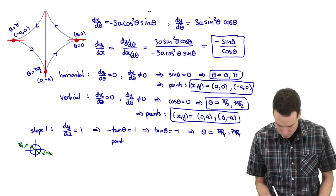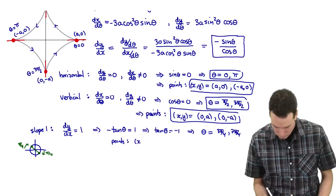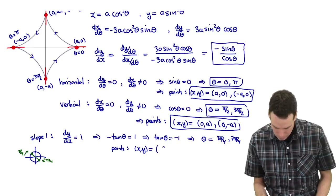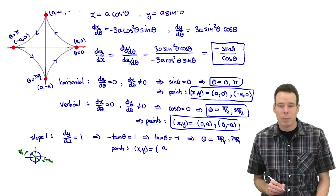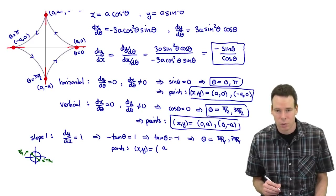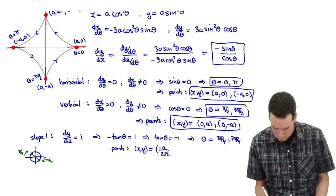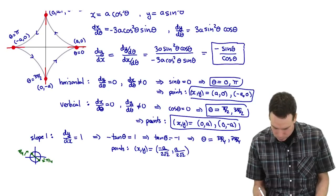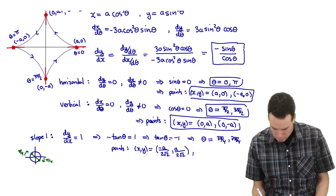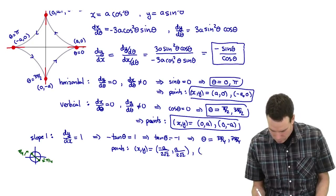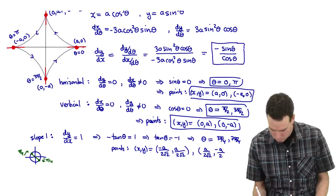The corresponding points: at theta = 3π/4, cos(3π/4) is −1/√2, so cubing gives −1/(2√2), and the sine value gives a/(2√2). At theta = 7π/4, we get a/(2√2) and −a/(2√2).